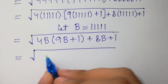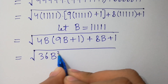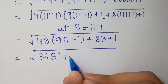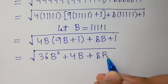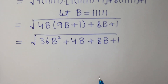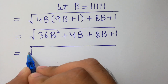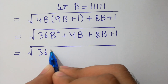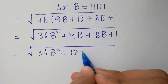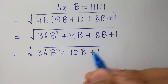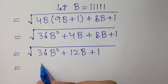We have 4 times 9 equals 36, giving us 36b² plus 4b plus 8b plus 1. Next step: we have 36b² plus 12b plus 1. We can factorize this as 6b plus 1 whole squared.